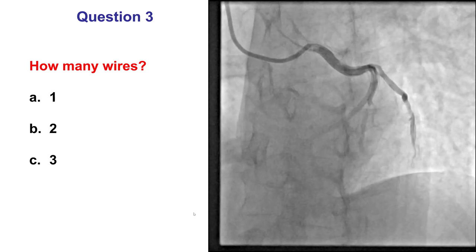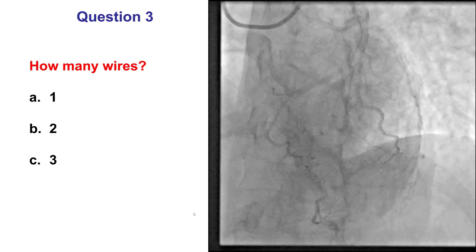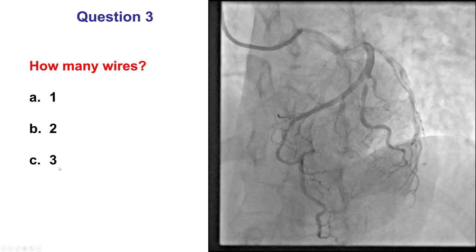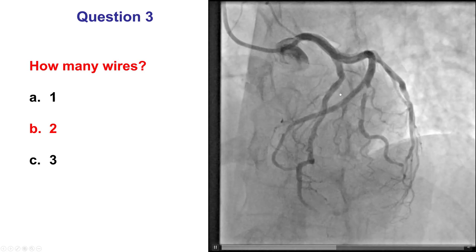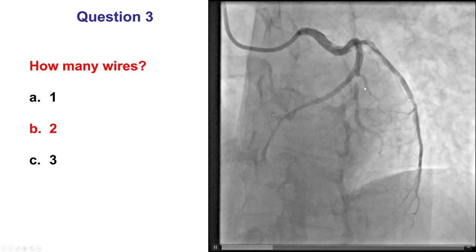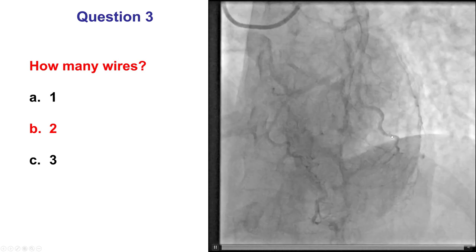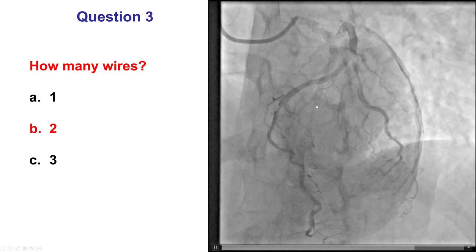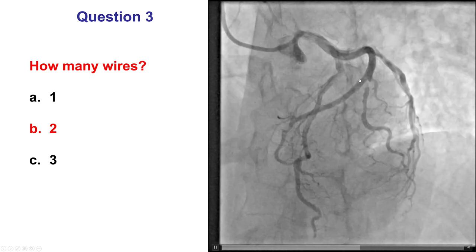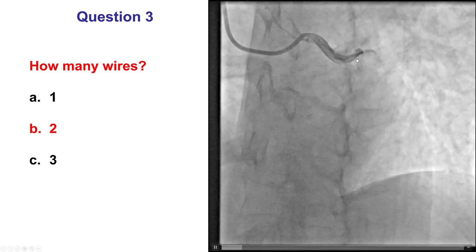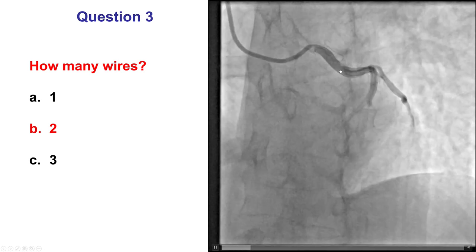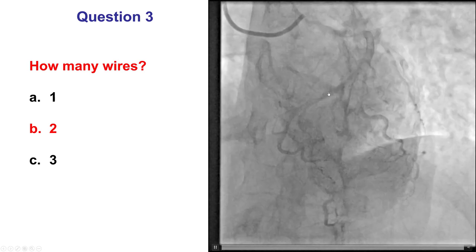Coming to the strategy: how many wires should ideally be used for treating this Medina 0-0-1 lesion? One wire, two wires, or three guide wires? I propose that two guide wires are needed regardless of the technique used. A wire is needed in the OM2, but if there is no wire in the distal circumflex and the stent placed in the OM2 protrudes too far back into the main vessel, it may be very difficult to rewire or the wire may go through the struts of the stent. So wires should be placed in both the OM2 and the distal circumflex.